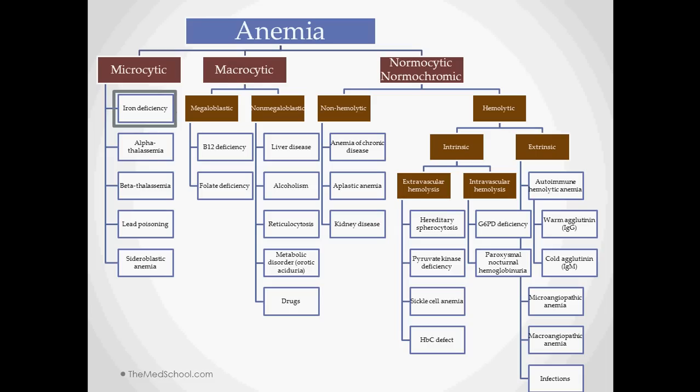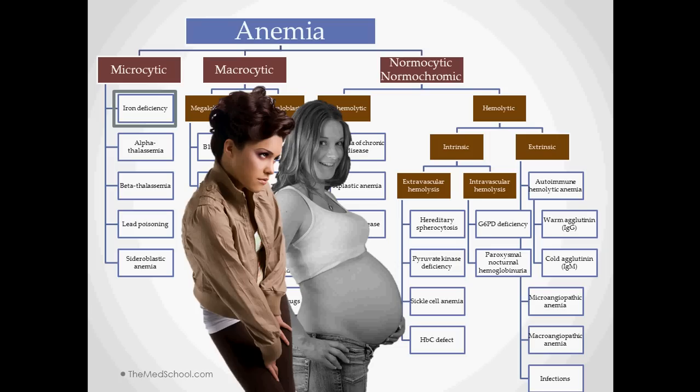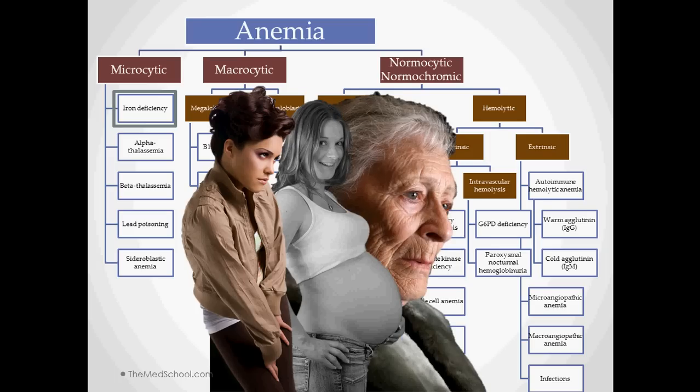And the most common of these is the iron deficiency anemias. The patients that you're going to see with this are commonly an adolescent girl who's just started menstruation, a pregnant female who's donating her iron to a greater cause, and the elderly men or women who are not getting enough iron in their diet because of socioeconomic conditions or maybe due to dementia. And also in the elderly, you have an increased incidence of cancers that may lead to bleeding.